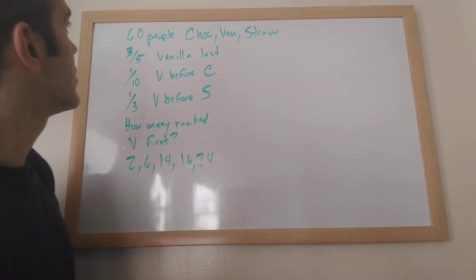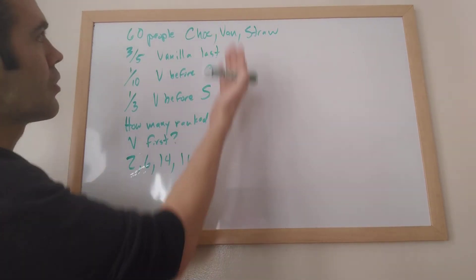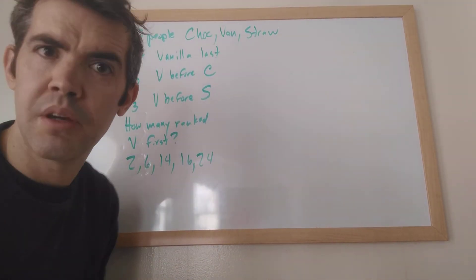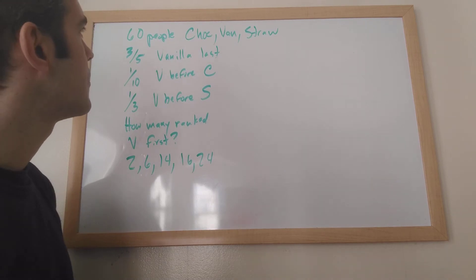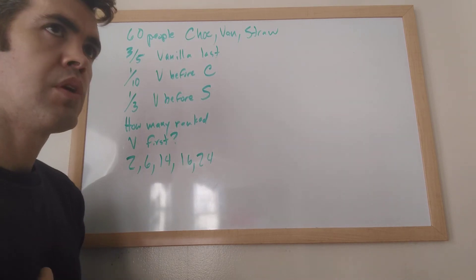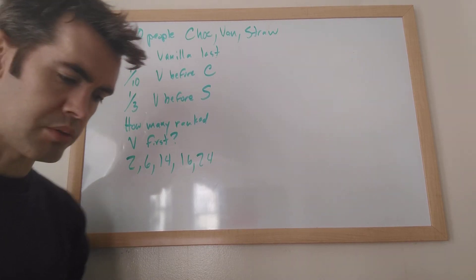So at first glance, this looks like a triple overlapping sets problem. I mean, look, you've got three categories, right? Chocolate, vanilla, strawberry. So it's got to be a triple overlapping sets problem that is weird. So the question you should ask yourself is, how do I identify whether something really is a triple overlapping sets problem?